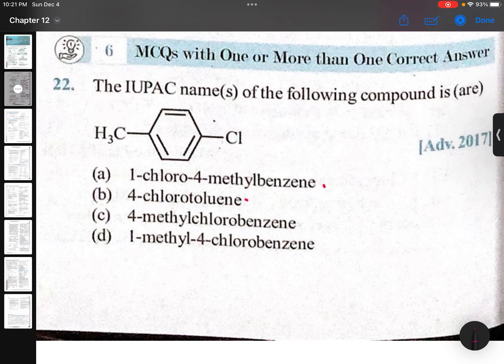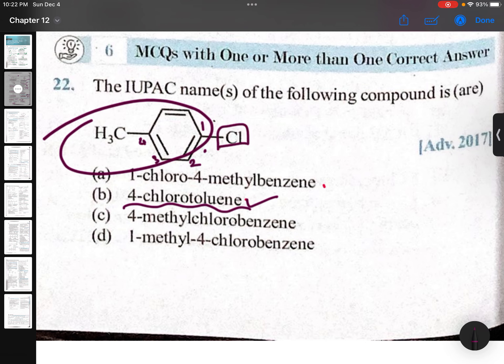The IUPAC names of the following compound are easier. This is - if you take this part, it is toluene, then it is 4-chlorotoluene. Otherwise, if you are taking numbering-wise, only benzene: one, two, three, four - 1-chloro-4-methylbenzene. 1-chloro-4-methylbenzene is also right.